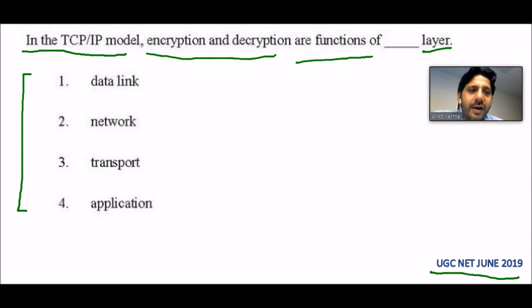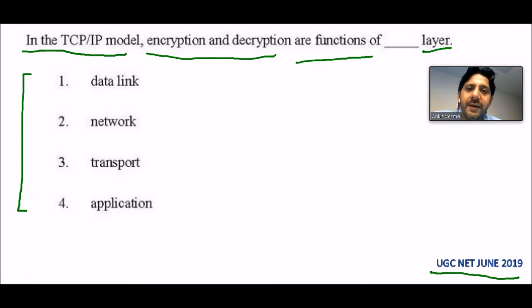We all are aware that the TCP/IP model has four layers: one is the application layer, second one is the transport layer, third one is the internet layer, and the fourth one is the host to network layer.